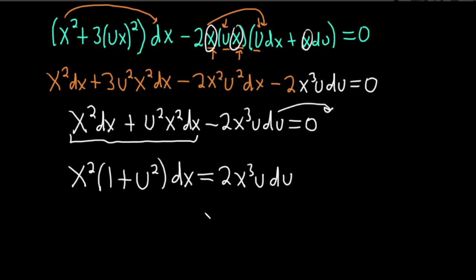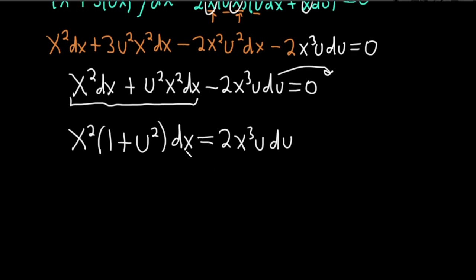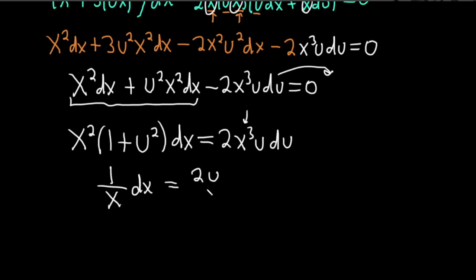The goal is to get all the x's on one side with dx and all the u's on one side with du. We divide both sides by x cubed and by (1 plus u squared), giving us (1/x) dx equals 2u over (1 plus u squared) du.